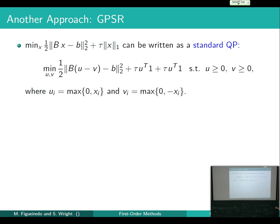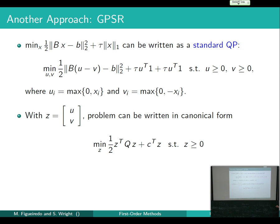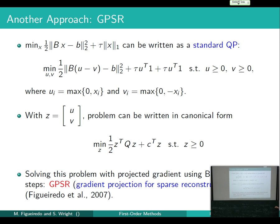Our first idea for the compressed sensing problem was to split the variable X into positive and negative parts: X equals U minus V, where U and V are both positive. The one-norm of X then equals the sum of elements of U plus V, turning it into a quadratic program with bound constraints, for which efficient projected-gradient solvers exist. We ended up not needing the splitting — the PROX operator handles it directly — but we got two papers out of it.